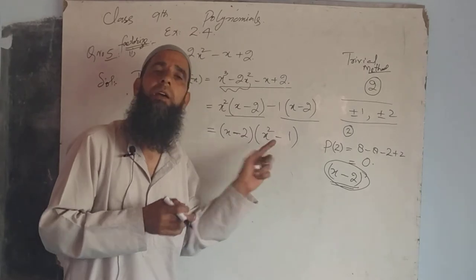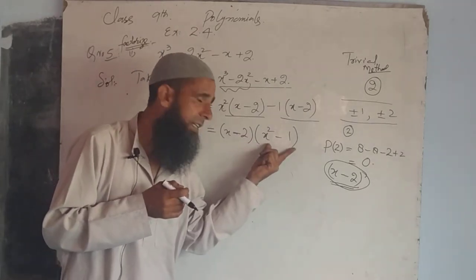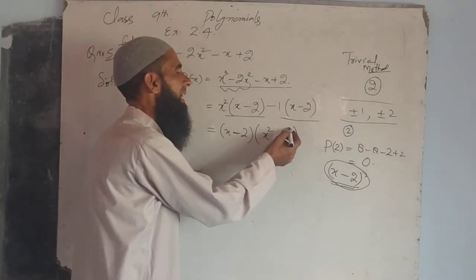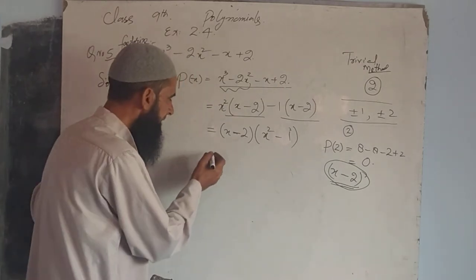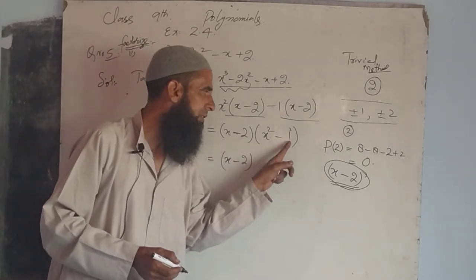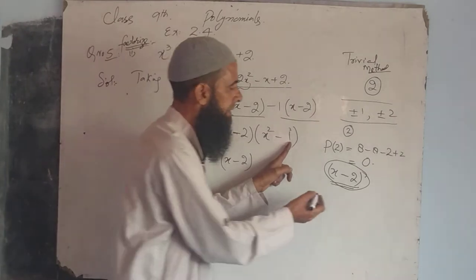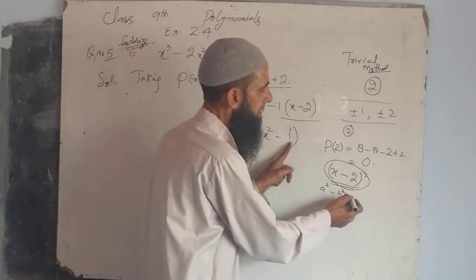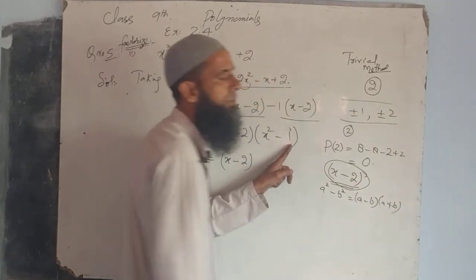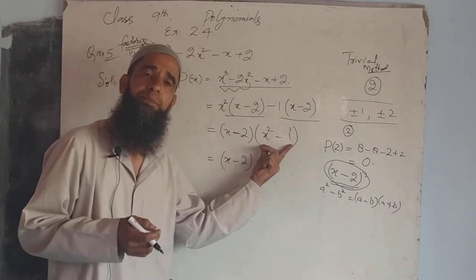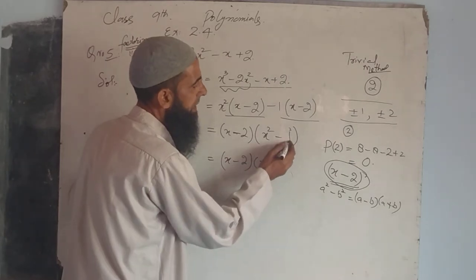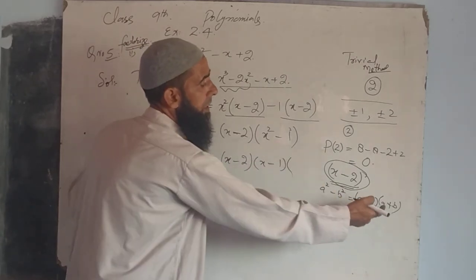But it is a well-known identity: x² minus a². That is 1² equals 1. We write x minus 2 into x² minus 1². We have the identity a² minus b² equals (a minus b)(a plus b). Using here, where a is x and b is 1, we get (x minus 1)(x plus 1).